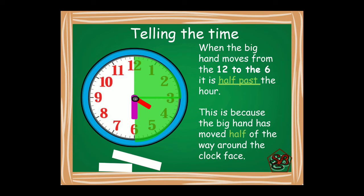When it is between 31 minutes to 59 minutes, we use to. And when it is exactly at 60 minutes, we use o'clock. Now when the big hand, the minute hand, has moved from 12 to 6, it is half past.